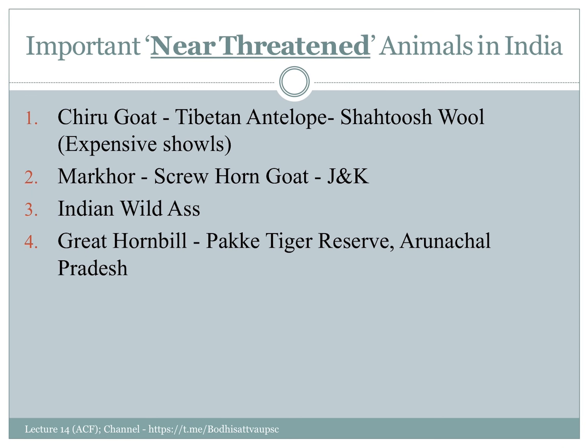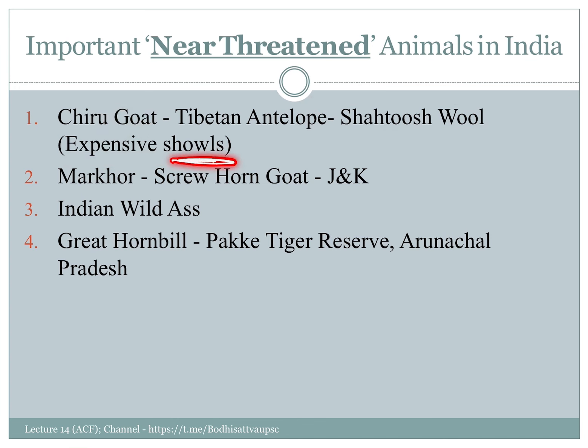Moving ahead, there are vulnerable species frequently mentioned in the news. In this category, there are Tibetan antelope — their wool is very expensive, around 700 per unit. There is also the markhor. These questions often appear in UPS and GPS exams. Indian wild ass is a near threatened category species found in Gujarat.